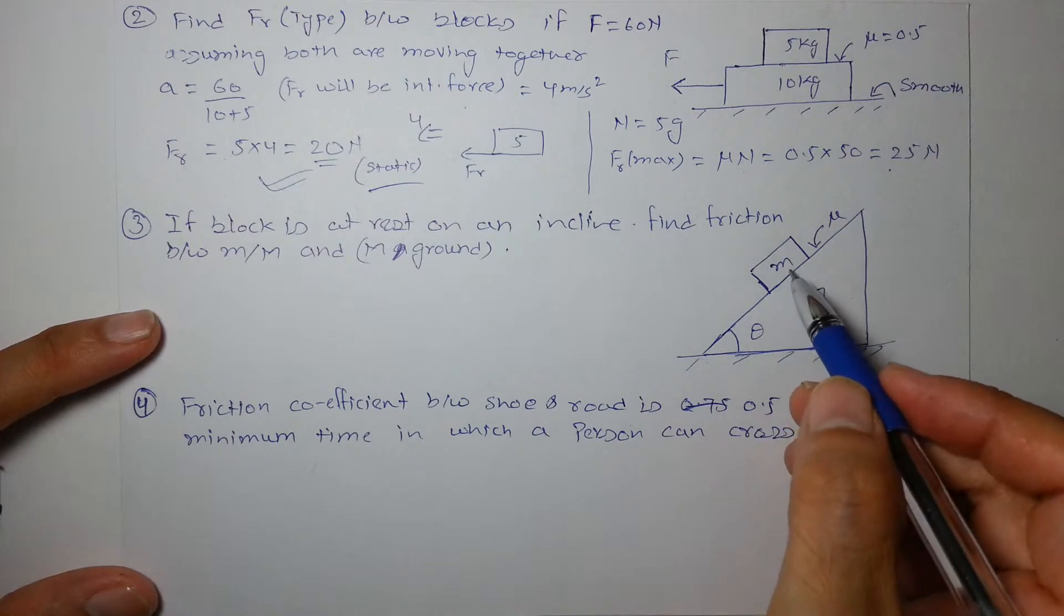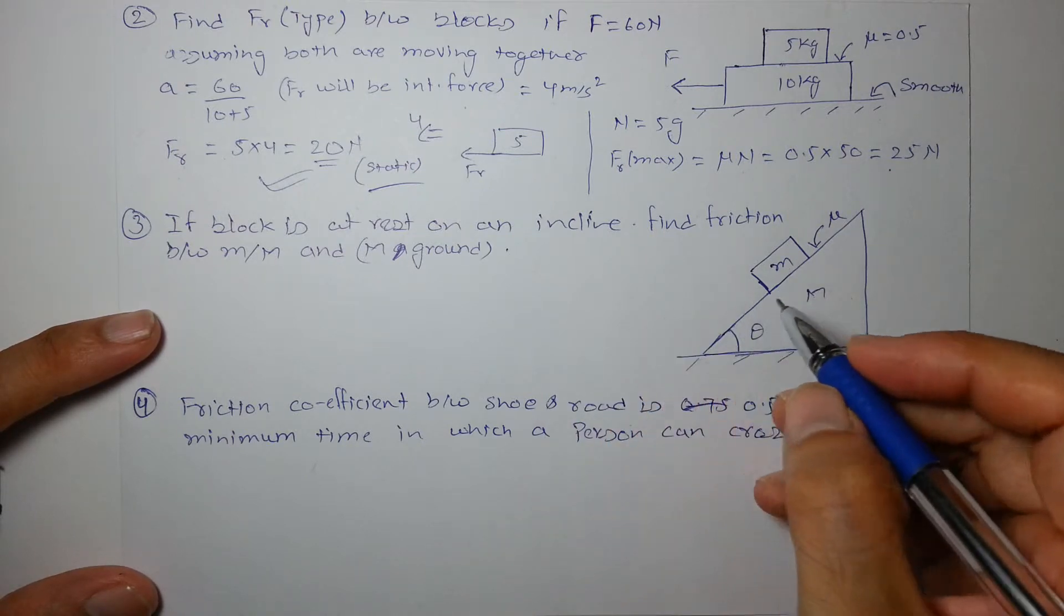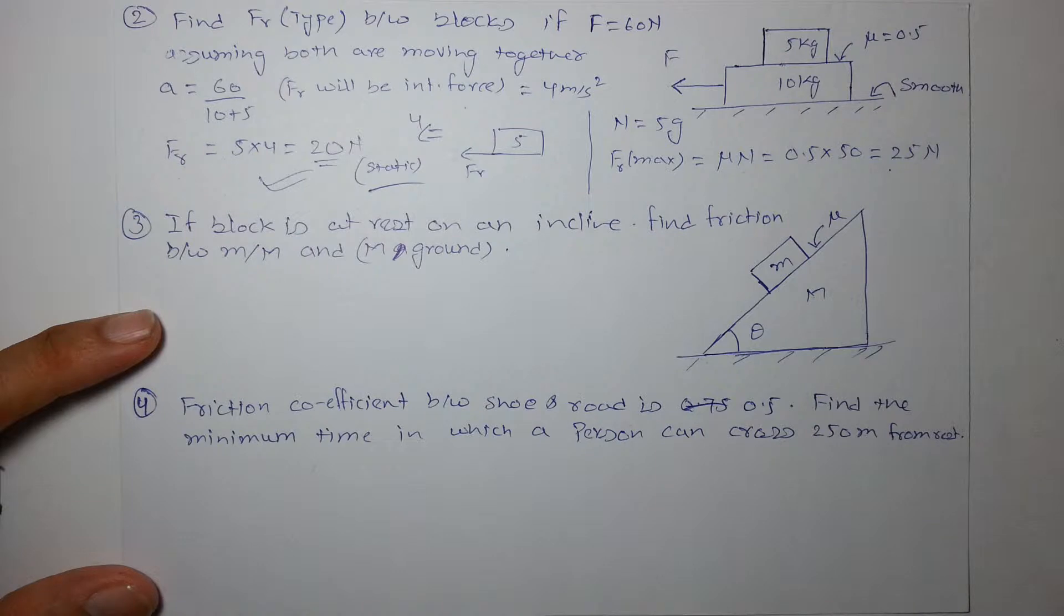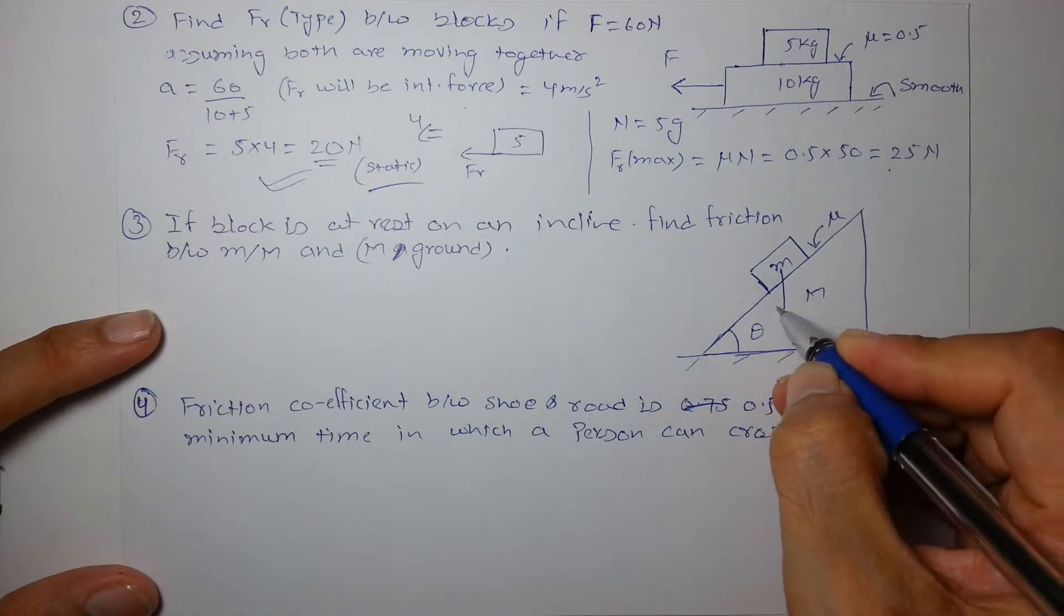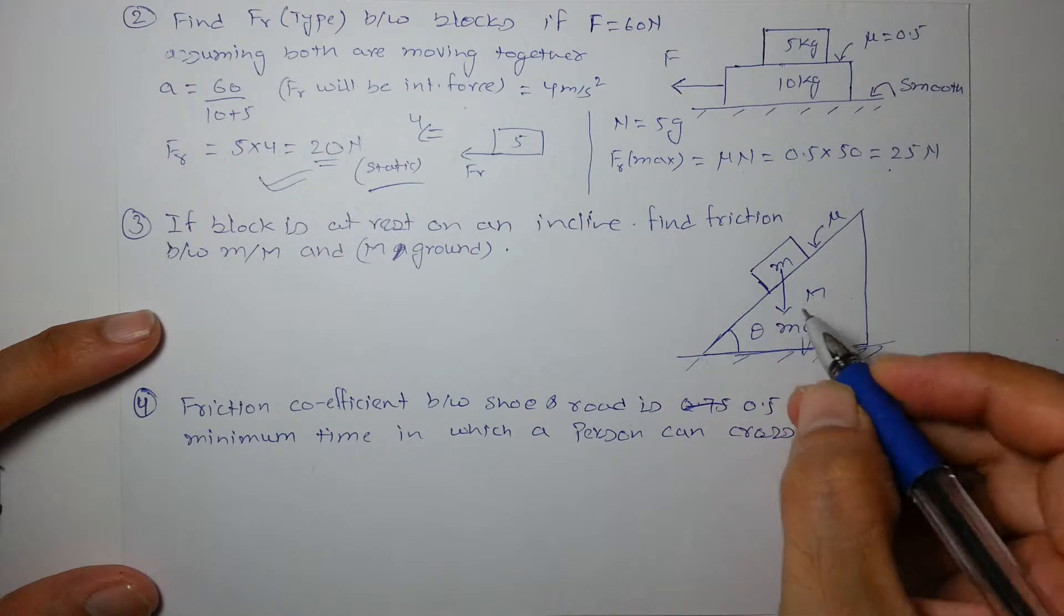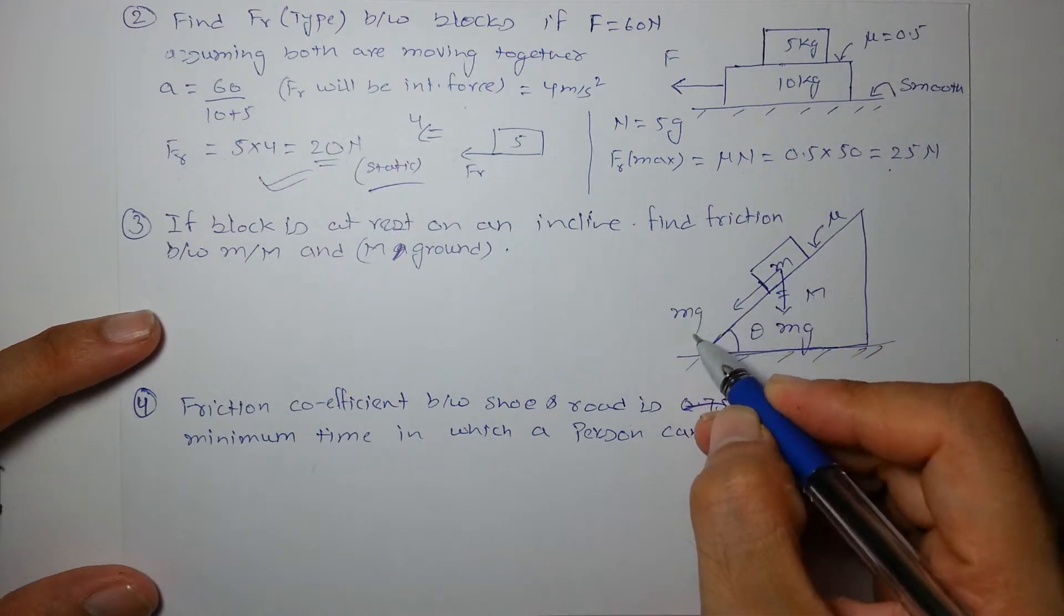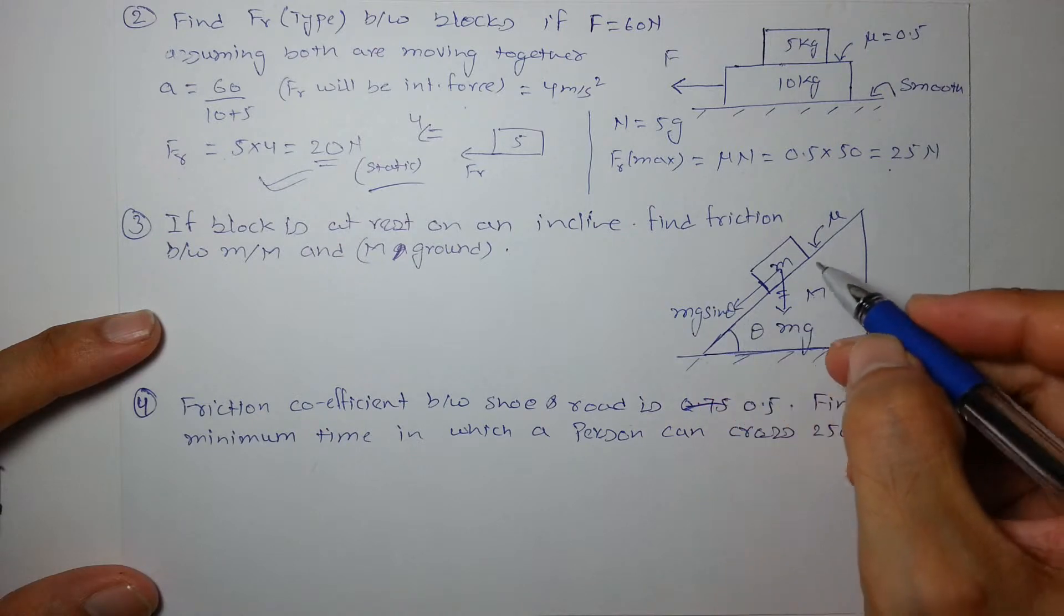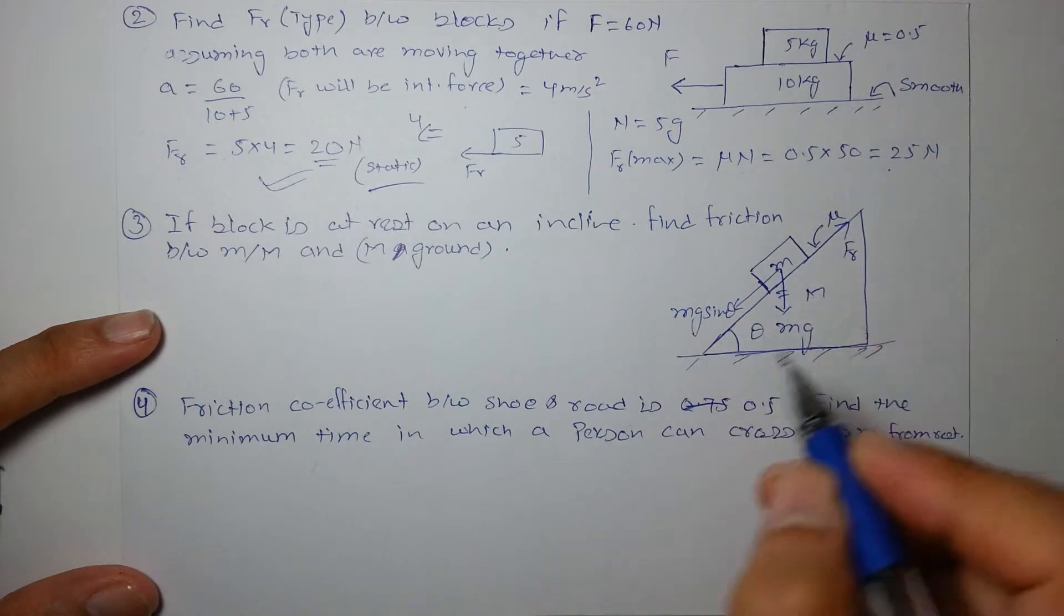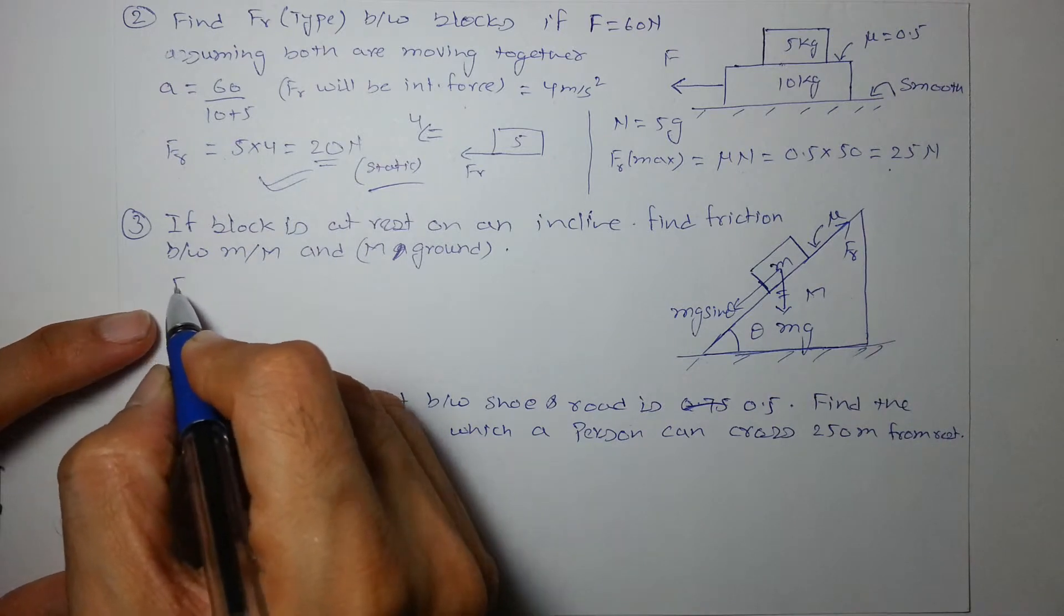So as this block is at rest, we can draw its FBD. This is one force Mg. Take the components, this is Mg sin theta and this is the force which is actually balanced by friction, so friction is nothing but Mg sin theta.